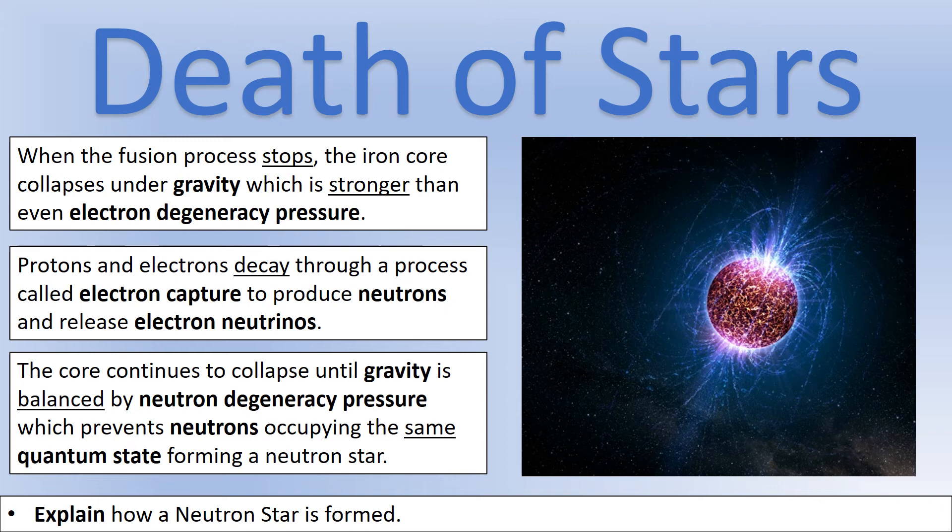So electrons are still not allowed to occupy the same quantum states. So what happens instead is that protons and electrons decay through a process called electron capture. And that results in producing neutrons and electron neutrinos in the end. So this is where the idea of a neutron star comes from, because it's made of neutrons. So it's a very, very dense region of space. It has very strong gravitational fields, magnetic fields, those kind of things. So we've still got a force of gravity. So the core is still trying to collapse, even though it's been turned into neutrons. But neutrons are fermions too, so they also can't occupy the same quantum state. And so we get a neutron degeneracy pressure, which balances gravity, forming a neutron star, which is a very stable object in space.